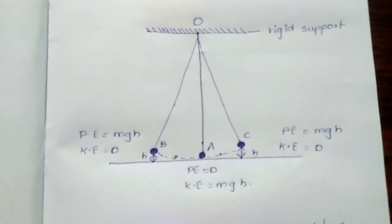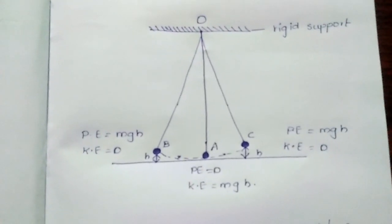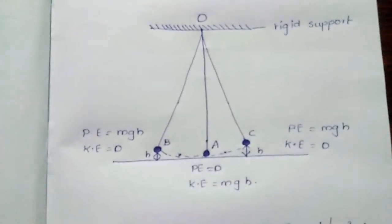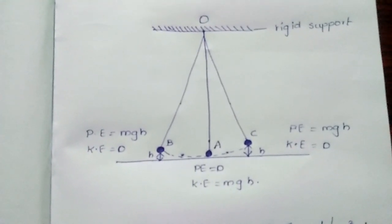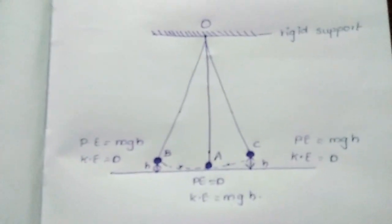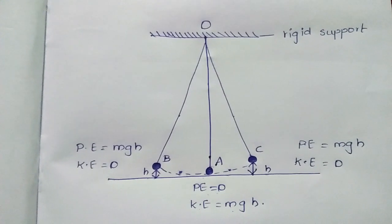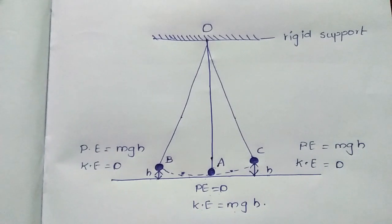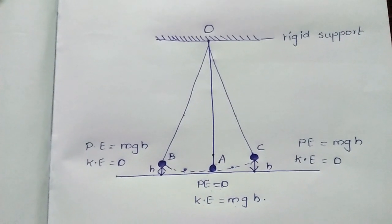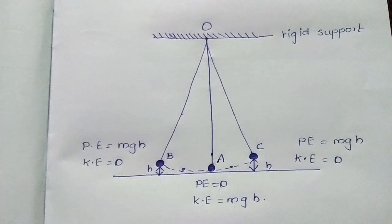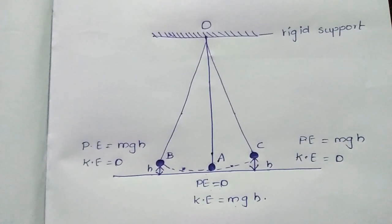We are going to understand this by a simple experiment with a simple pendulum. In this simple pendulum, A is the mean position of the bob and O is the suspended position, the resting place. It is suspended by a rigid support. B and C are the extreme positions of the bob A with mass M.